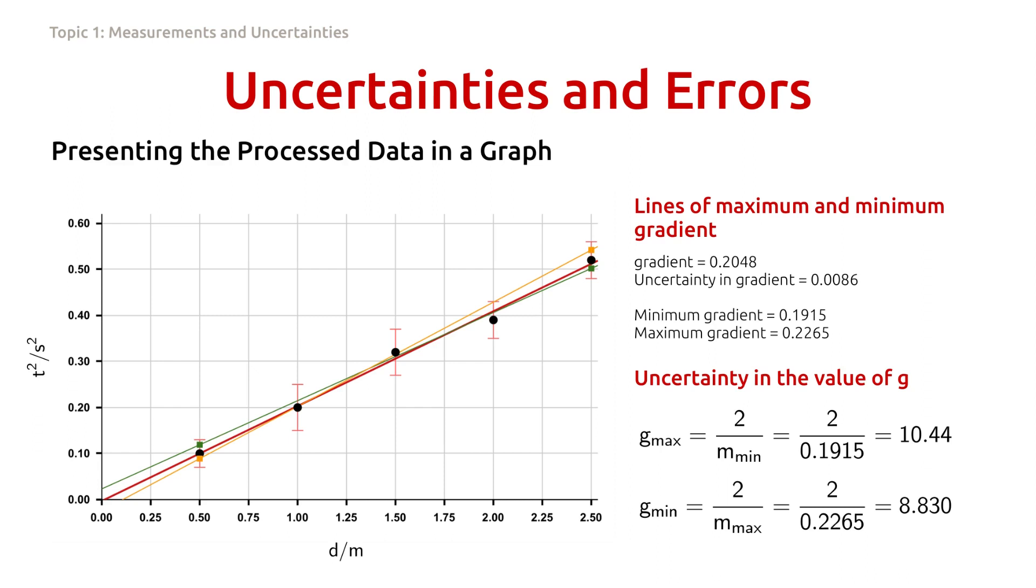Now that we know the minimum and maximum gradients, we can calculate the uncertainty in the value of g. Notice that, to find the maximum g, we divide 2 by the minimum m, by the minimum gradient, and g minimum is 2 over m maximum. The uncertainty in the value of g is thus g maximum minus g minimum divided by 2. And plugging in the numbers, for g max and g min, yield 0.805.